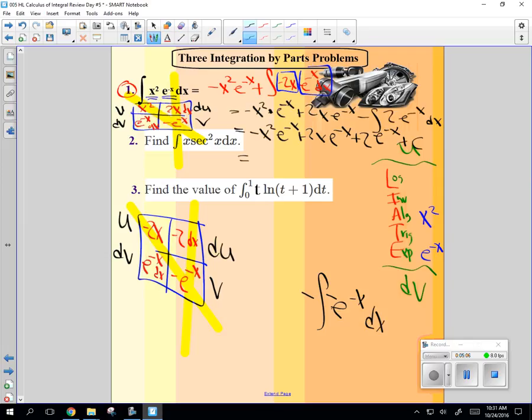Now, what the book did is they factored out e to the negative x. And so they got negative x squared plus 2x plus 2 plus c. Does that look like what they had? Either answer is fine. I like this one. That's good.